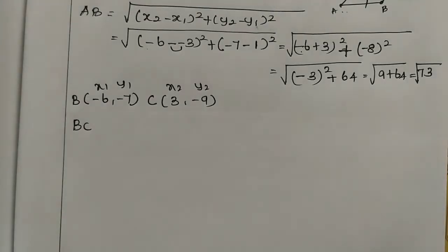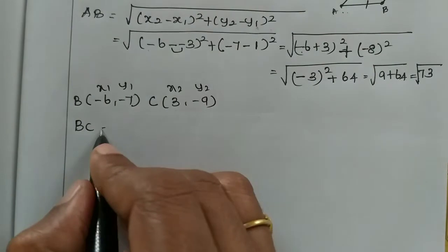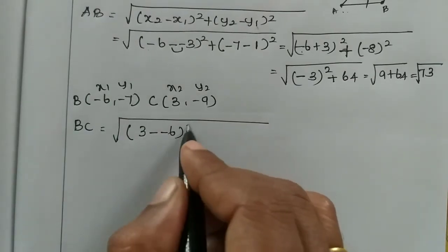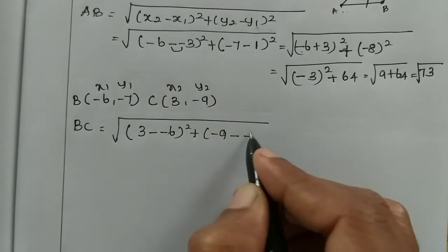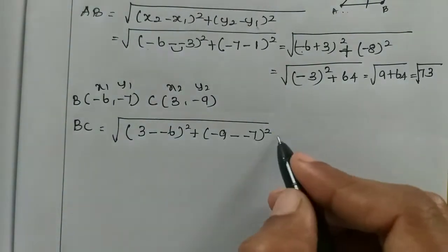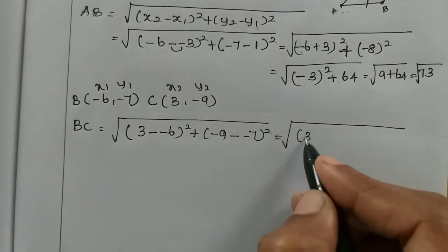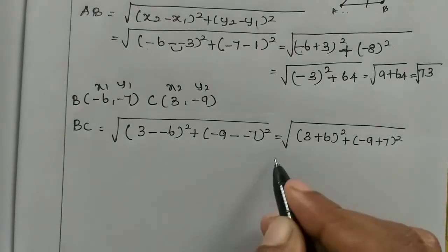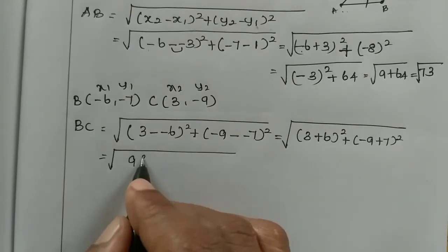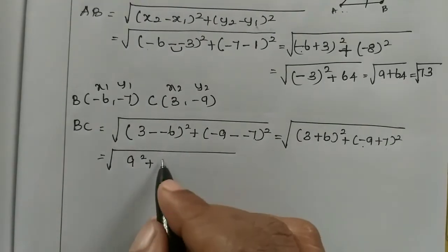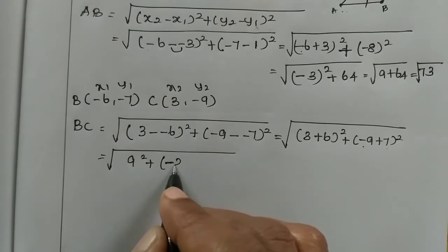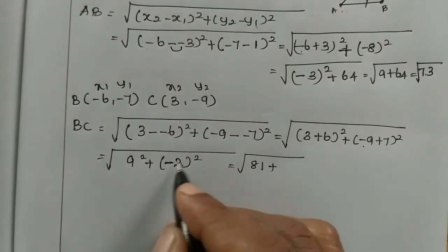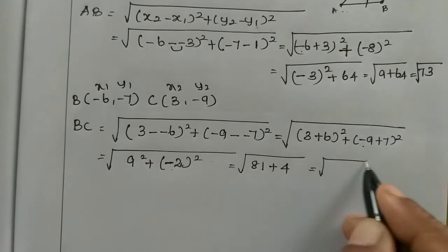Next, BC length. Mark x1, y1, x2, y2. So (x2 minus x1): minus 6 minus 3, whole square, plus (y2 minus y1): minus 9 minus minus 7, whole square. That gives 9 squared plus minus 2 squared, which is 81 plus 4, equal to root of 85.